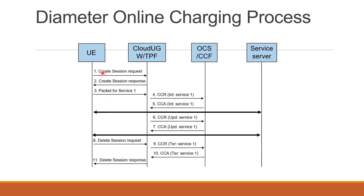In the service flow: you create a service request and get a service response. After communication with PCRF, the user sends the packet to the service. The UGW needs to check whether quota is available, so it sends a CCR initial request to OCS with the specific rule being requested — which consists of your rating group and the service ID to be subscribed. OCS confirms the quota is available and allows the user for that service. Once the initial quota is exhausted, the user sends an update service request mentioning how much quota was consumed and requesting more quota.